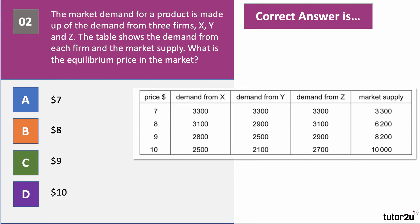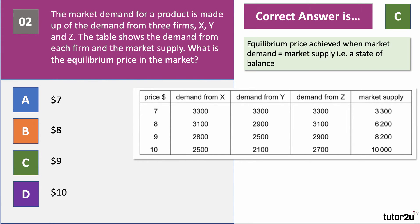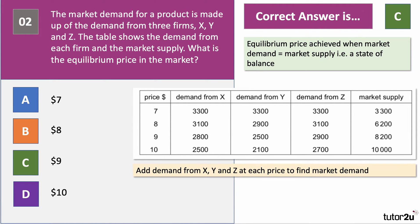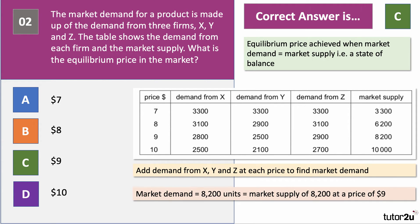The right answer to question two is C — nine dollars. The equilibrium price is achieved when market demand is in balance with market supply, with no shortage or surplus. We need to work out market demand, which is simply the demand at each price from X plus Y plus Z. Adding those three firms together, market demand was 8,200 units when the price is nine dollars.